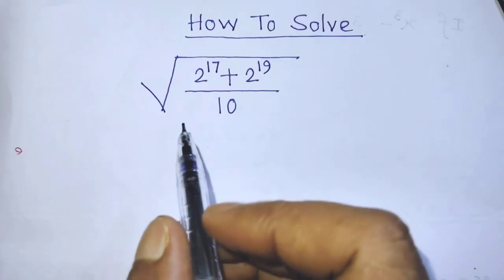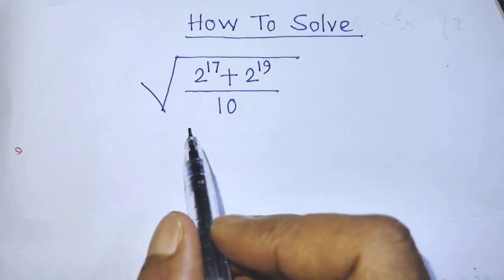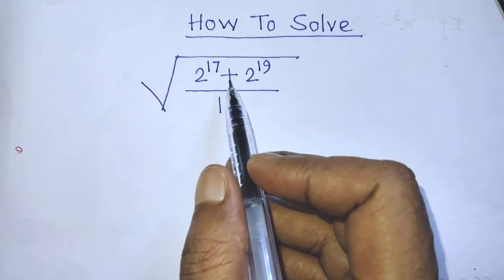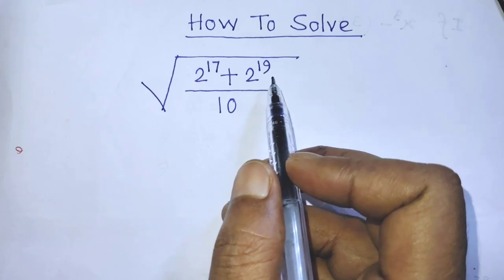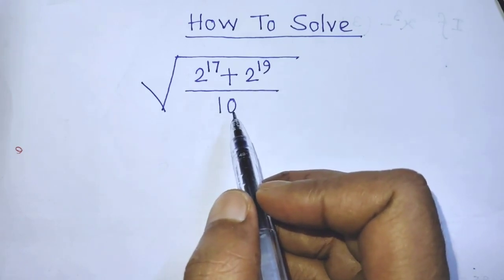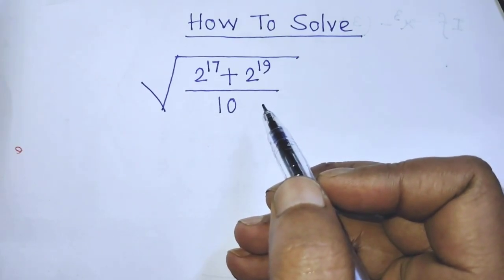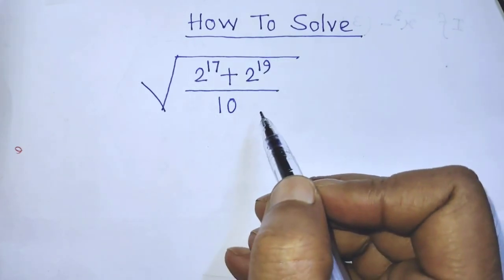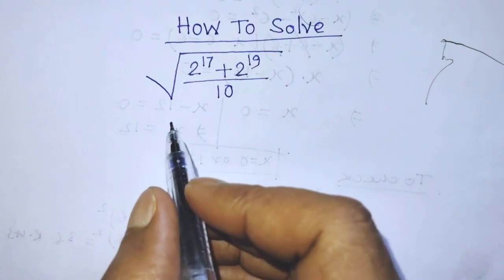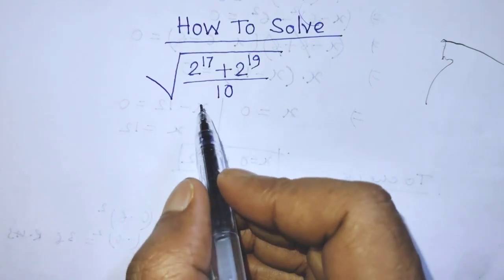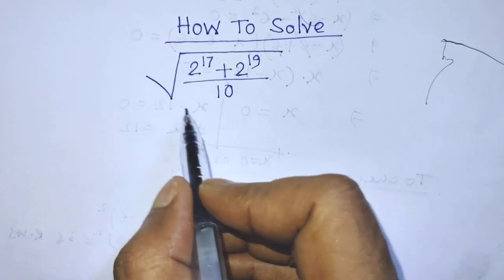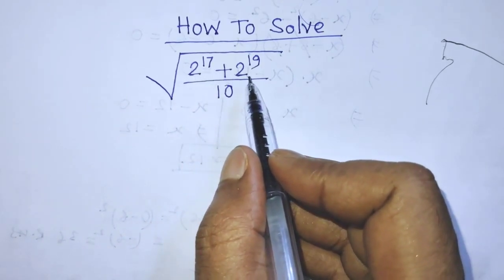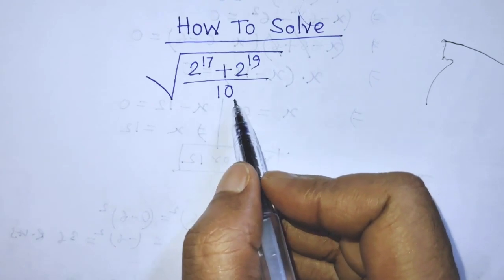Hello guys, you are welcome to solve this math problem which is square root of 2 to the power 17 plus 2 to the power 19 over 10. Today I am telling you how to simplify this algebraic expression. Our given algebraic expression is square root of 2 to the power 17 plus 2 to the power 19 over 10.